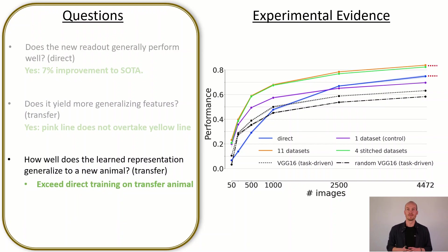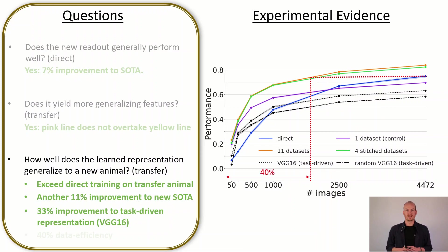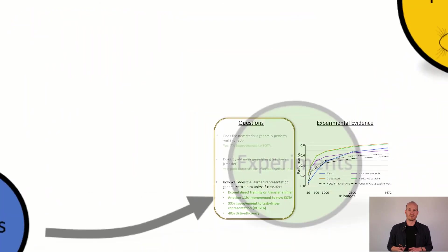So what have we achieved so far? We see that we have an improvement of 11% to the previous state-of-the-art performance. We also see that 33% improvement to the task-driven transfer is actually quite a good result. And we see that we are saving 40% of data which makes us way more data efficient than the direct training approach.